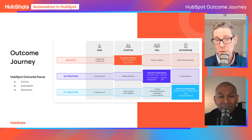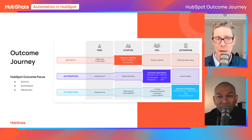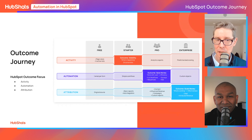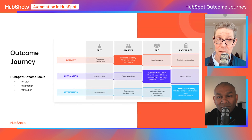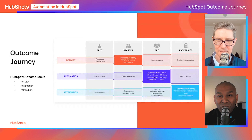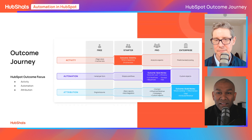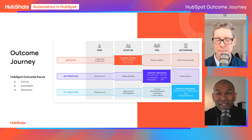Attribution really shines at the enterprise level. Starter has some basic stuff, pro starts unveiling features, but enterprise is where you want to be for full attribution. Automation though is really at the pro level — you get a lot of bang for your buck there. People often think the jump from starter to professional is big, but when you think about the efficiency you achieve, it's far less than the headcount cost of people actually doing those jobs manually, including all the errors that come with that.